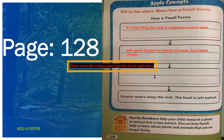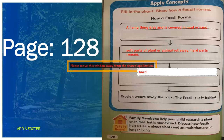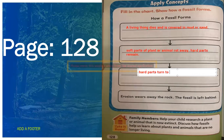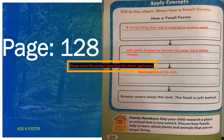Number three: the hard part turns into rock. Hard parts turn to rock. And number four: erosion wears away the rock and the fossil is left behind. That is how scientists define the fossil. These are the four steps.